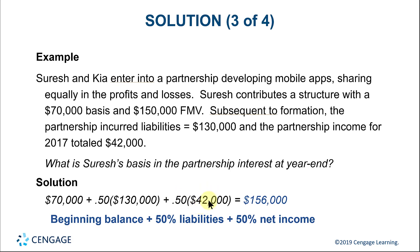Shuresh's basis in his partnership interest equals his initial contribution (equal to the $70,000 basis of the asset contributed), plus his 50% share of the partnership's $130,000 liabilities, plus his 50% share of the partnership income. Keep in mind this is not cash going to the partner — all we're doing is calculating the partner's basis, now totaling $156,000. This is the amount Shuresh can take out tax-free as a distribution, or deduct if there are losses, or use as his basis upon sale of his interest.